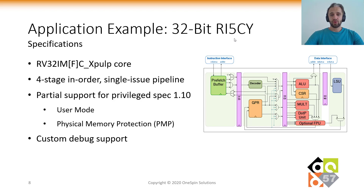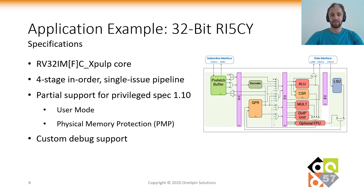The app has been applied to a RISC-V core with configuration RV32IMC. It has an optional floating point extension and the custom X-Pulp extension. It's a four-stage in-order, single-issue pipeline with partial support for the privileged spec, including user mode and physical memory protection (PMP). Its debug support is custom.